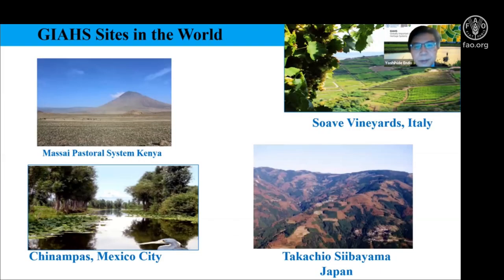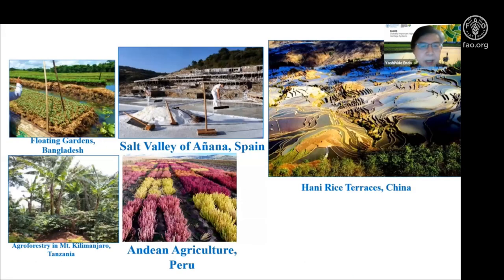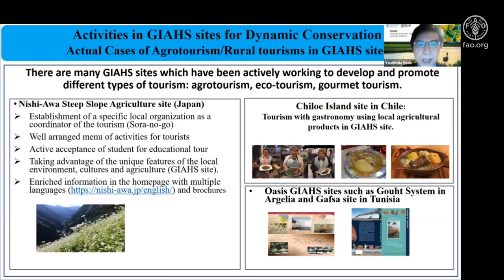These are typical GIS sites in the world — the Maasai system in Mexico, chinampas, Chinese honey rice, Spanish salt production, mountain kilimanjaro agroforestry, and floating gardens in Bangladesh. We currently have 62 GIS sites in 22 countries. In many of these sites, there are activities promoting agritourism, ecotourism, gastronomy tourism, wine tourism, or education tourism, depending on the situation.